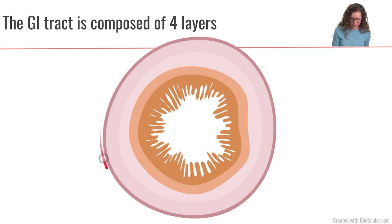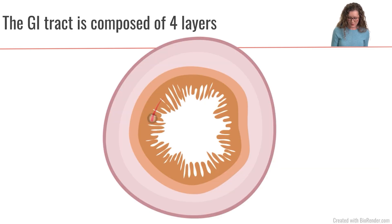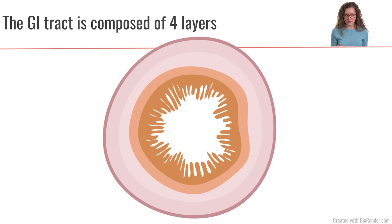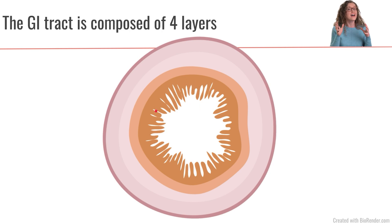The final layer out here is called the serosa, which is a fibrous layer that holds everything together. So this pattern of mucosa, submucosa, muscularis externa, and serosa is continuous all the way along the gastrointestinal tract. However, there will be some differences — for example, the thickness and the amount of villi, or finger-like projections pointing towards the lumen, will vary depending on what part of the GI tract we're in and what its function is. We'll discuss that as we go through.